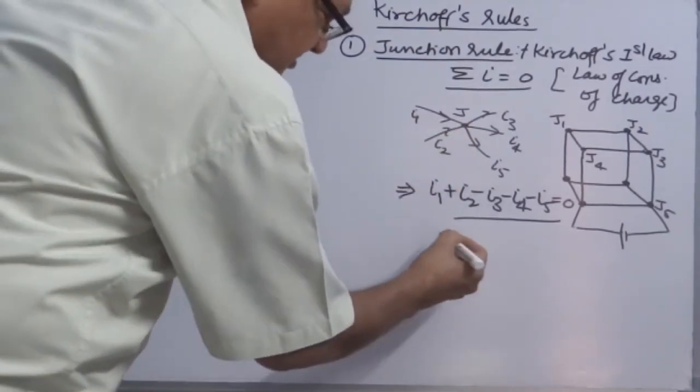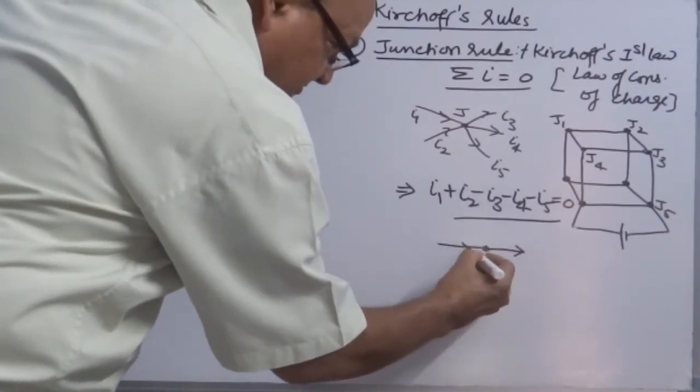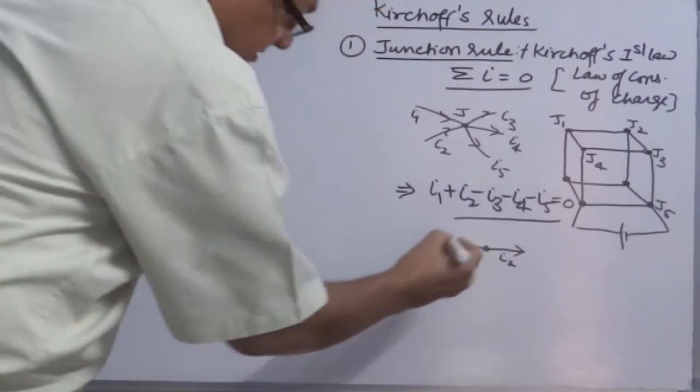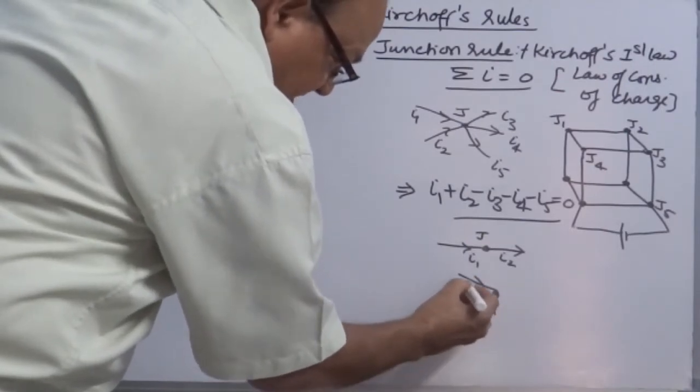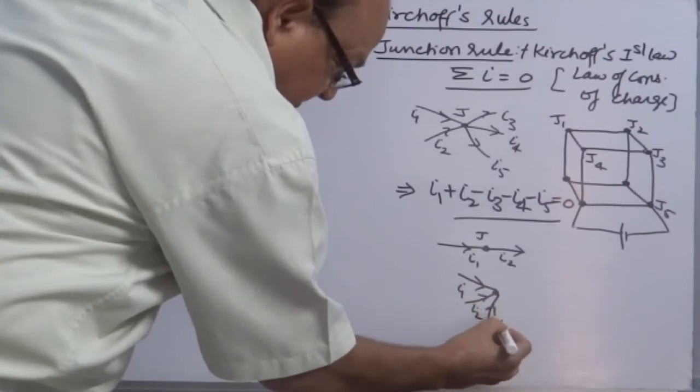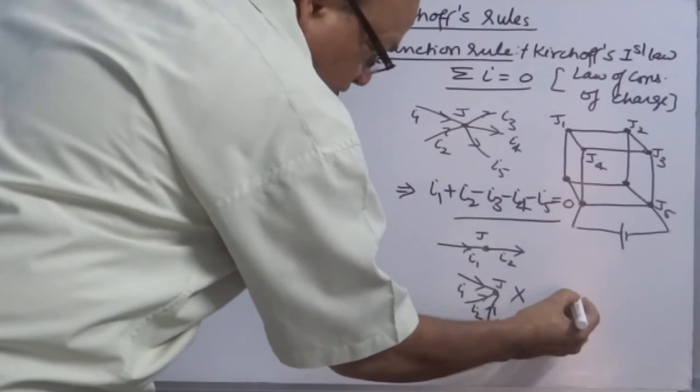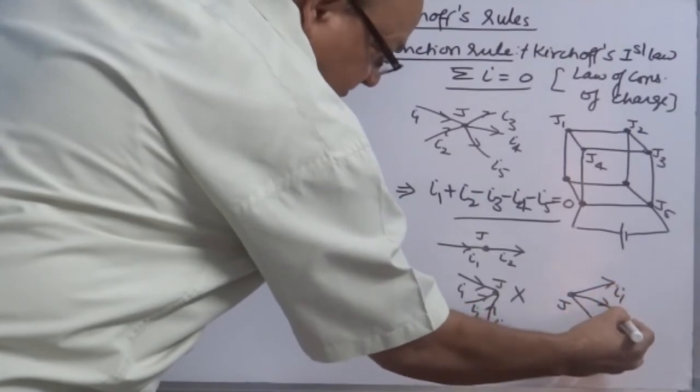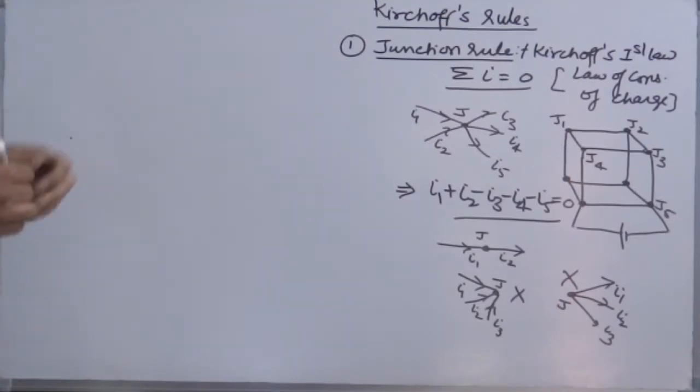The essential condition is that there should be at least one inlet and one outlet. A junction cannot be possible like this: that all currents are approaching to the junction and it is not leaving out. This is not possible. No current is approaching and currents are leaving out of the junction - this is also not possible. Remember this point.